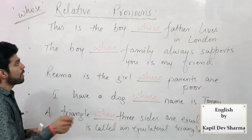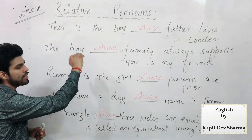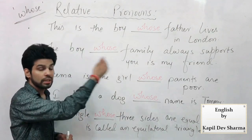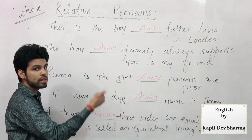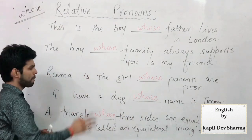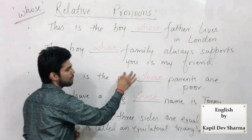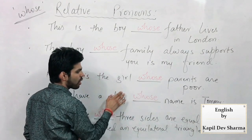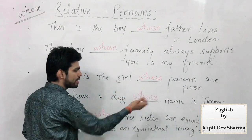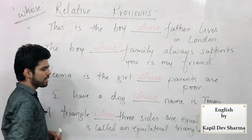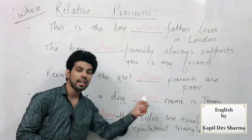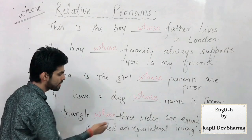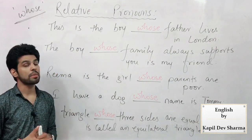Conclusion: 'Voh ladka jiske pita' — his father belonged to him, so 'whose' was used. Boy is not subject or object. 'Voh ladka jiska parivaar' — his right was being shown, something of his — use 'whose.' 'Rima voh ladki hai jiske maa-baap' — Rima's parents, possession — use 'whose.' 'Us dog ka naam, us dog ka color, us dog ki height' etc. — position is being talked about, ownership is shown — use 'whose.' 'The triangle whose three sides are equal' — always use 'whose' with these.